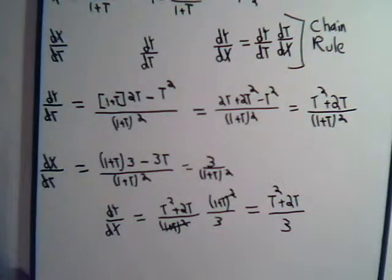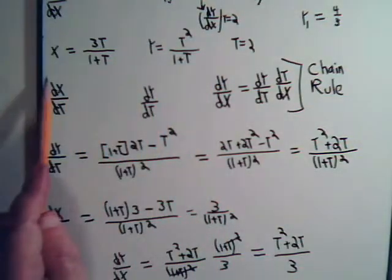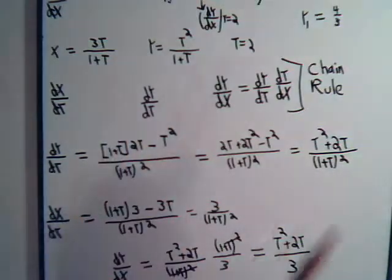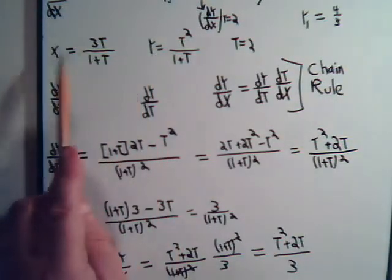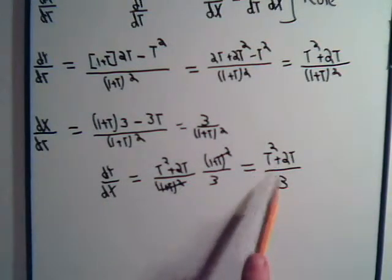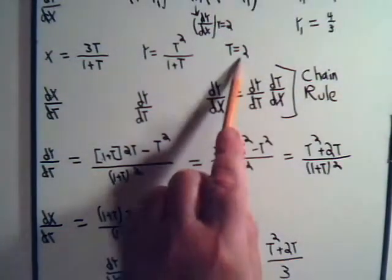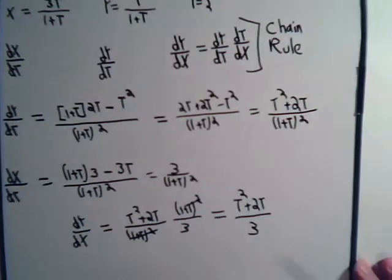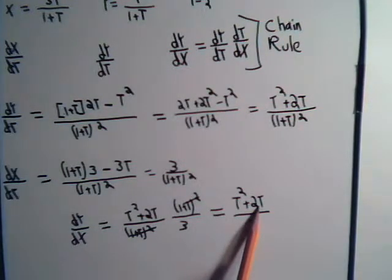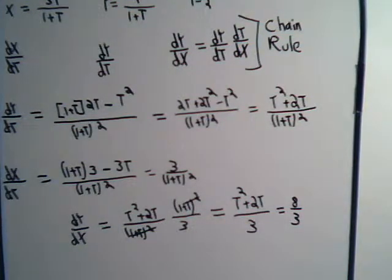This was the parametric curve here, and the parametric equation for the curve. This will tell us at any time t, we can know what y is and what x is. And here, now we know what the slope of the curve is. We want to know, what is the slope dy/dx when t equals 2? So, 2 squared is 4, plus 2 times 2 is 4, 4 plus 4 is 8, that equals 8 thirds.